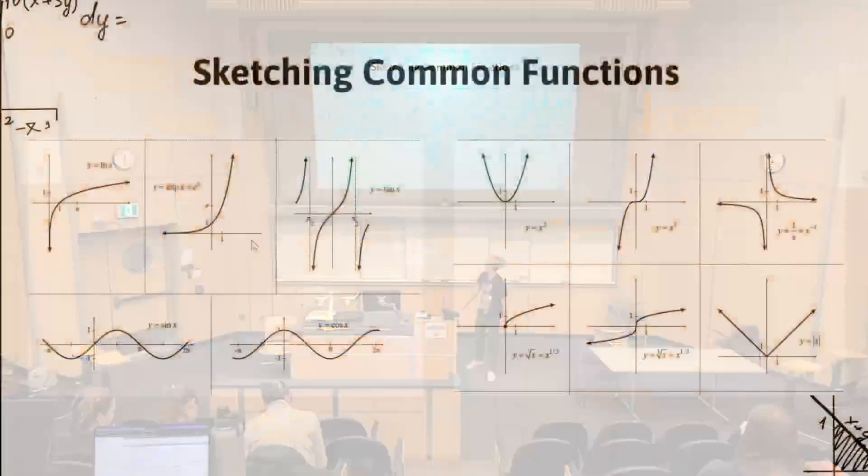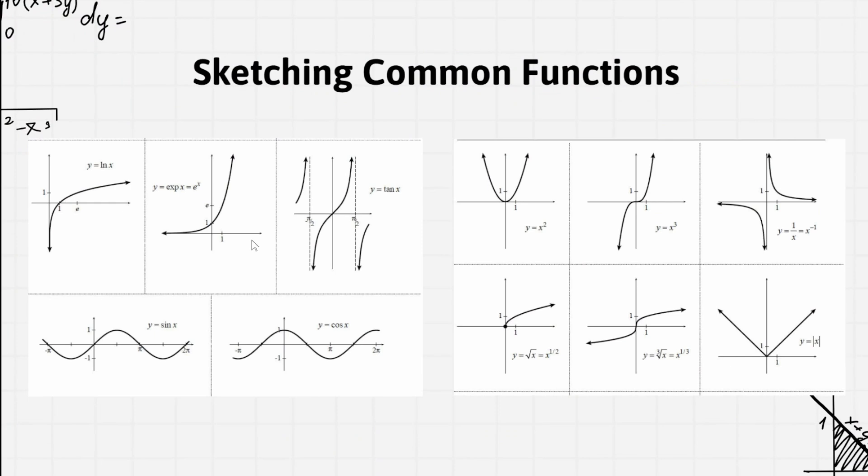Curve sketching. These are just what some of the common curve sketching will look like. So make sure you have a rough idea of what e to the x looks like, what ln x looks like, and understand what their domains are. So e to the x can't be negative. ln of x, the y value can't be negative. Those are inverse functions. And then x squared, square root of x. If you understand and have a basic idea of how these functions look like, that should be good.